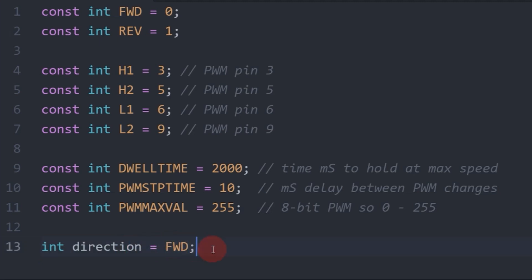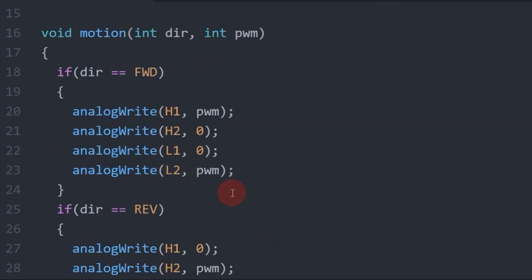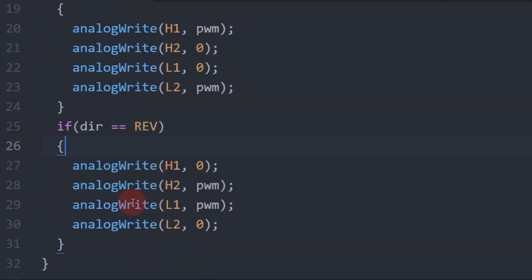Now we need to create a motion function that will take the direction and PWM value as parameters. All right, so here's our motion function. Like I said, we're taking the direction and the PWM value zero to 255 as an argument. All right, so if our direction is forward, we want to set the PWM value to transistor high one on the left side and low two on the right side. The PWM values, the other transistors will be zero. If the direction is reverse, then the opposite is true. H2 and L1 get the PWM signal and the other two are zero.